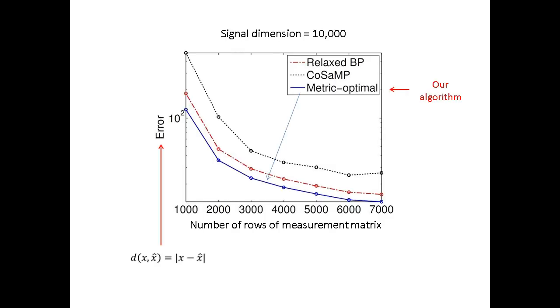Let's see how well this actually works in practice by looking at numerical results. In this first plot, we use the absolute error as the error metric and compare our algorithm to two other well-known algorithms, Relaxed BP and CoSaMP. The horizontal axis here represents the number of rows in the measurement matrix, where we note that the actual matrix had 10,000 columns.